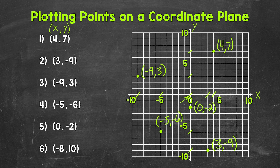And then lastly, number 6 — the x-coordinate is negative 8 and the y-coordinate is 10. So we need to go over to negative 8 on the x-axis, which is right here, and then up 10, and 10 is right here on the y-axis. So we plot this point right here, and this is negative 8, 10.